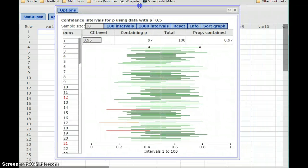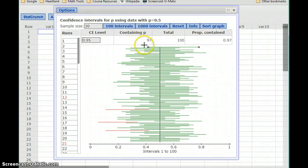So what StatCrunch has just done here is generated 100 different experiments where a sample value was collected and then again stretched into that range of values. So each of these horizontal bars represents that confidence interval. And at the middle of that interval is our point estimate.